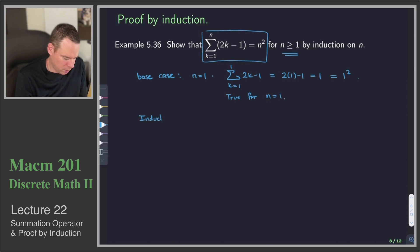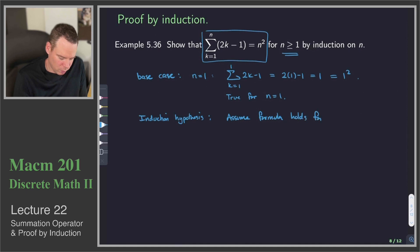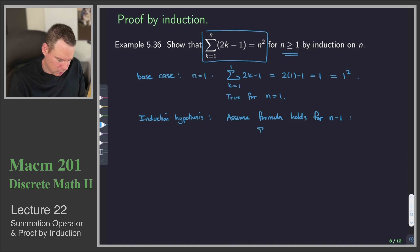Now we look for our induction hypothesis — this is what we're going to assume to be true. We will assume the formula holds for n minus 1. That means we are assuming that the sum from k equals 1 to n minus 1 of 2k minus 1 is equal to (n minus 1) squared.